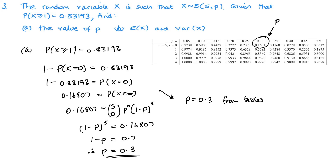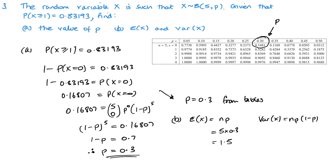For part b, the mean of X is simply np = 5 times 0.3 = 1.5. The variance of X is np(1 minus p) — we've already worked out np = 1.5 — so variance = 1.5 times 0.7 = 1.05. And there we have the third question complete.